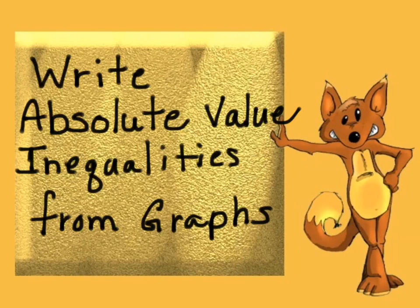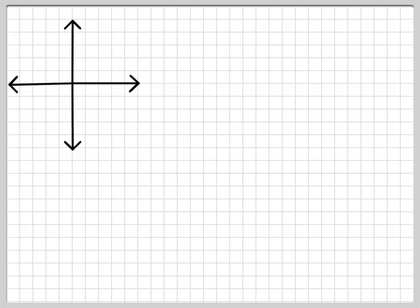Let's see if you are given a picture of a graph of an absolute value inequality if you can write the equation. I think you can. Alright, so let's start off with a graph. This one is going to be drawn like this. We have dotted lines and we have our shading already put in there.